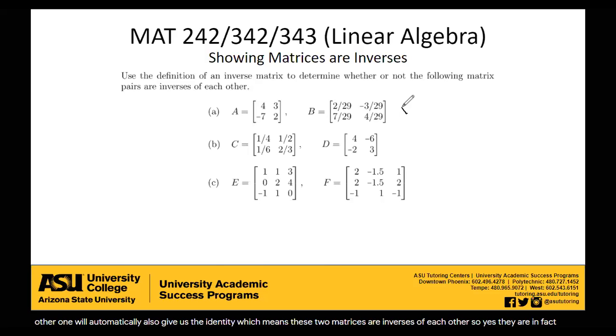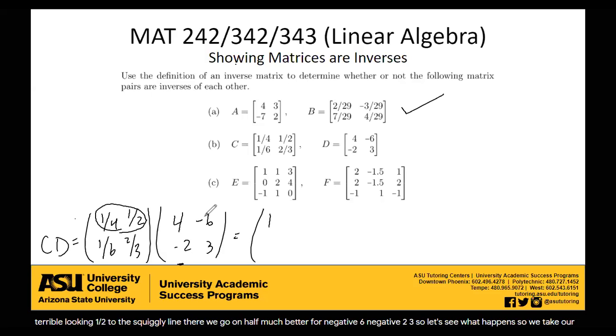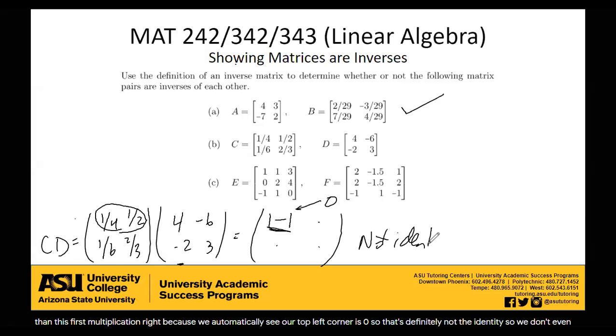Let's move on to the next one. Let's try it out. Let's do C times D. So we have one-fourth, one-half, one-sixth, and two-thirds times 4, negative 6, negative 2, 3. So let's see what happens. We take our first row, multiply by our first column. One-fourth times 4 is 1. One-half times negative 2 is minus 1. We don't really have to go much further than this first multiplication, because we automatically see our top left corner is zero. So that's definitely not the identity. So we don't even have to do the rest of the multiplication. Whatever it's going to end up being, we automatically know it's not going to be the identity, just because that top left is not a one.